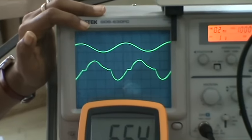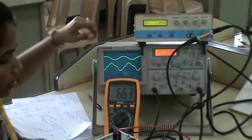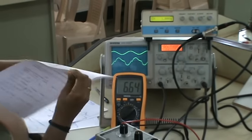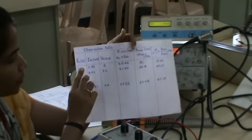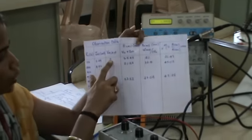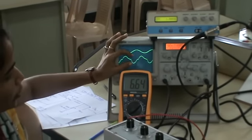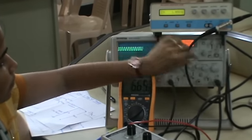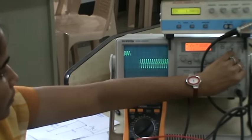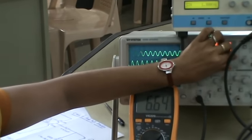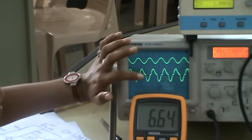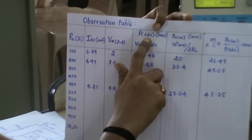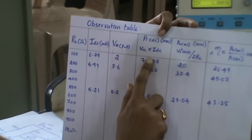I have given the DRB value of 100 ohms and I have noted down the values. For 100 ohms, IDC value is around 6.29 milliamps and peak to peak voltage we need to take is 2.2 volts.